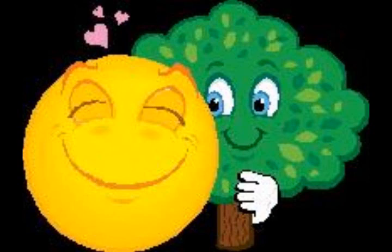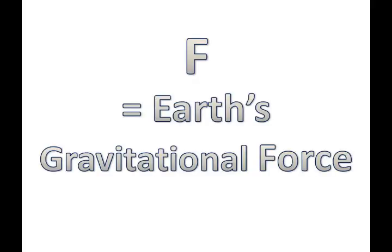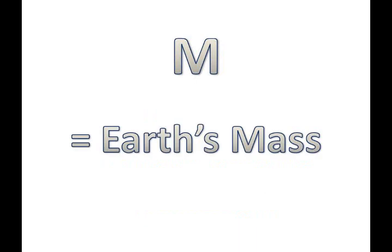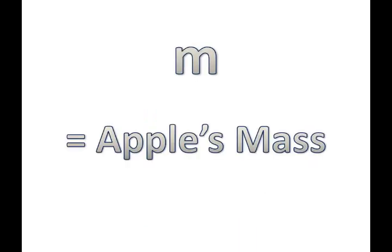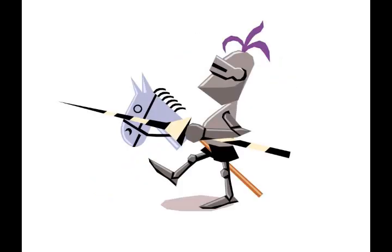Let's take a look at Newton's famous equation. F is Earth's gravitational force, and that equals big G — Newton's gravitational constant — times big M — Earth's mass — times little m — the apple's mass — divided by d — distance — squared. Ta-da! Knighthood, please.